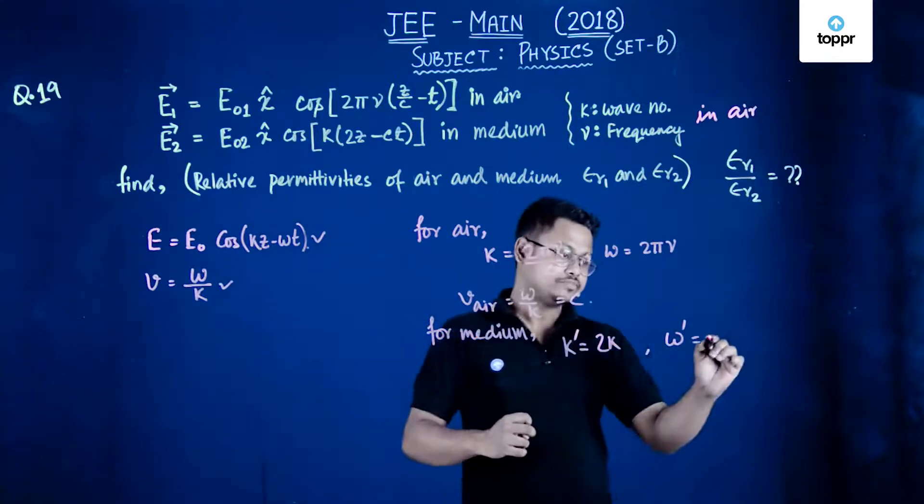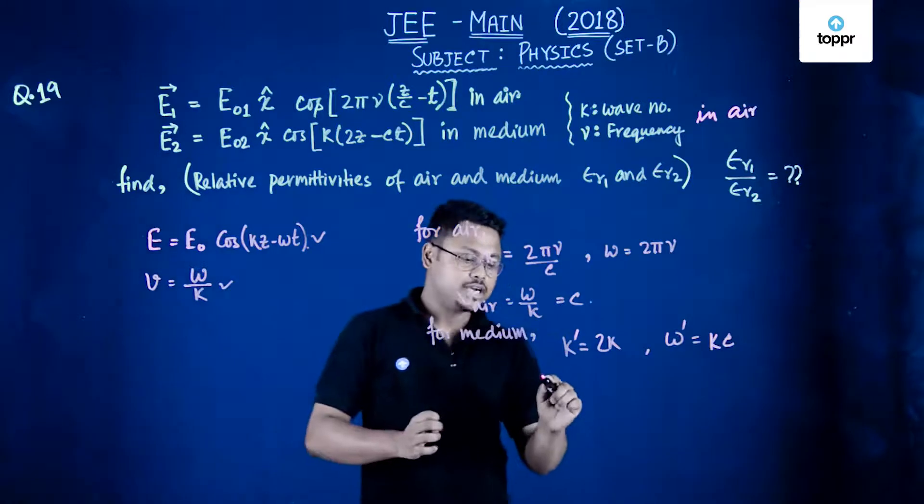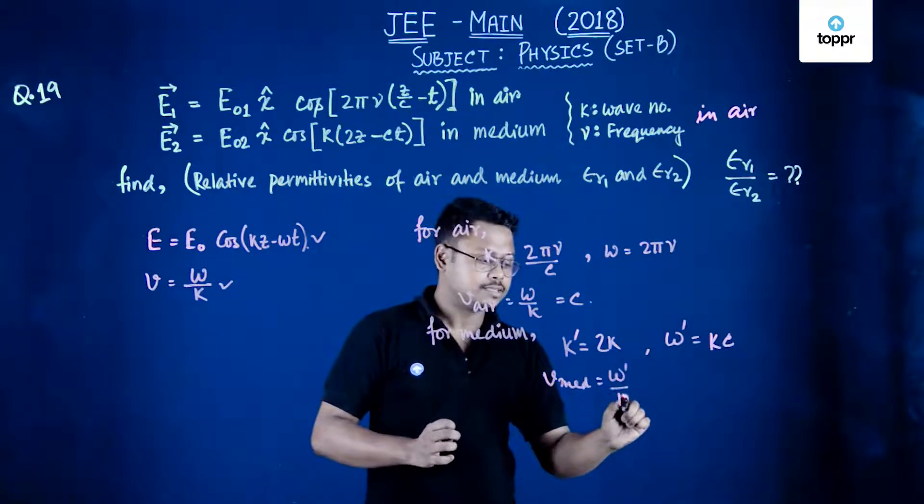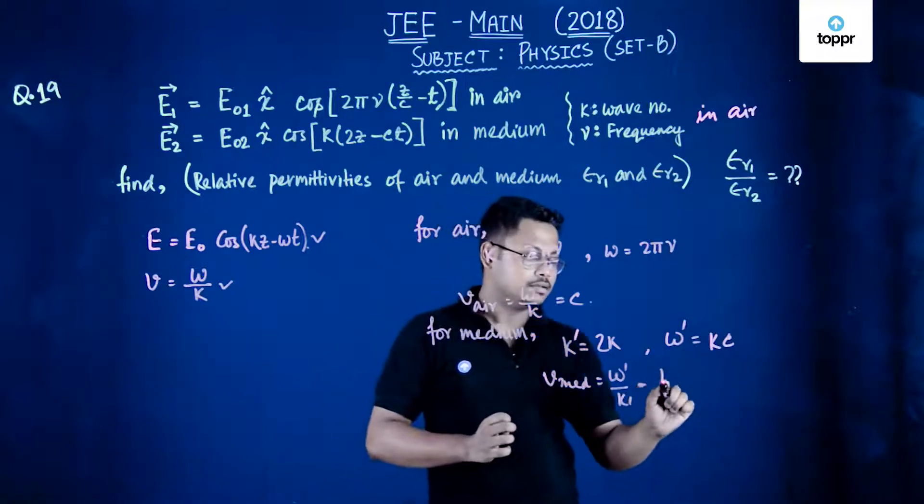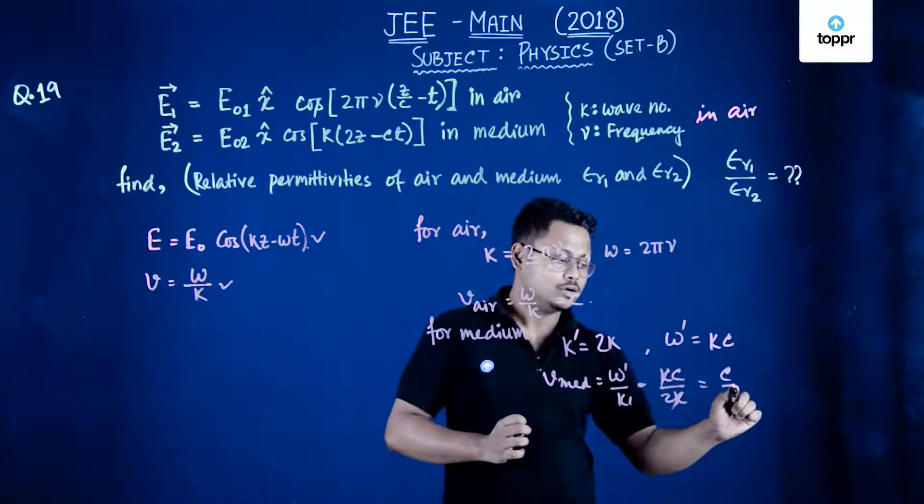Omega dash will be k into c. So velocity in medium will be omega dash upon k dash and that will be kc upon twice k and that will be c by 2.